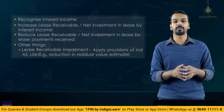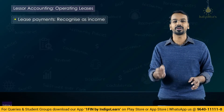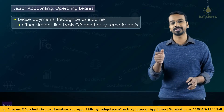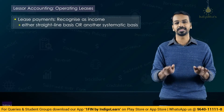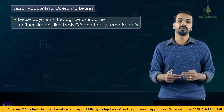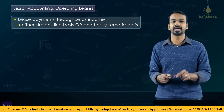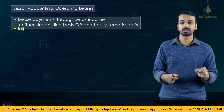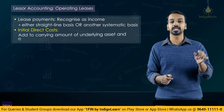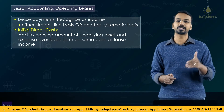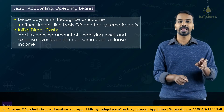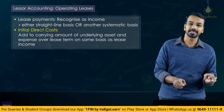Then we understood how to account for operating leases, which is pretty simple and straightforward. Lease income is recognized on a straight-line basis or any other systematic basis over the lease term. When it comes to operating leases, if there are initial direct costs, they are not immediately expensed. They are added to the carrying amount of the underlying asset and expensed in a manner similar to how lease income is recognized.